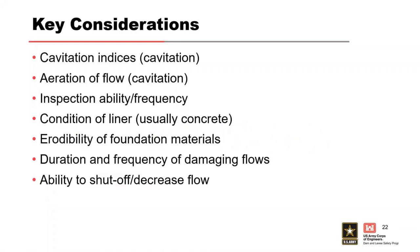Key considerations: cavitation index — low is bad, below 0.3 deserves a lot of attention. It's an index, not a physical parameter in the way we relate it to damage. Big bluff bodies like baffles can have a cavitation index around one, while small offsets are probably going to be below 0.3 where you get into issues. Aeration of flow changes the sonic velocity of water — when those bubbles collapse, the air-water mixture cushions it. Something like 5% air is pretty significant mitigation. If it's aerated flow at the invert, that's pretty good mitigation for cavitation.